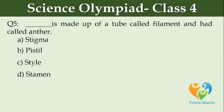Dash is made up of a tube called filament and a head called anther. Option A: stigma. Option B: pistil. Option C: style. Option D: stamen.